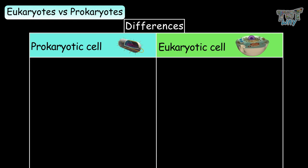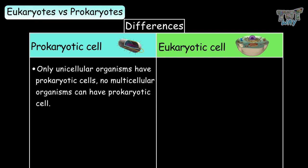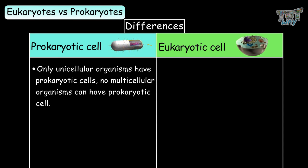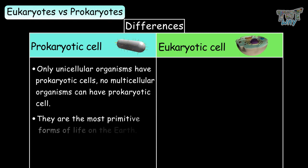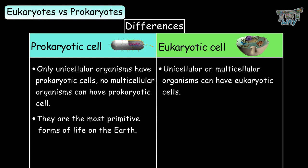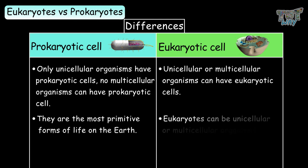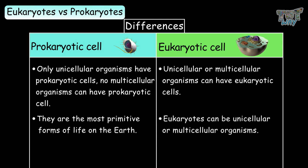Only unicellular organisms have prokaryotic cells — no multicellular organism can have prokaryotic cells, and they are the most primitive form of life on Earth. Eukaryotes, on the other hand, can be unicellular or multicellular organisms.